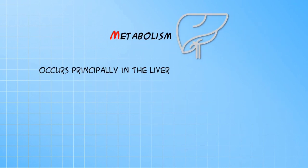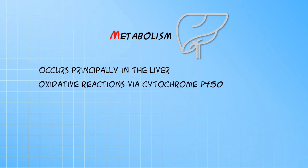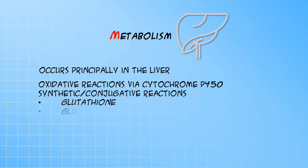Metabolism can take place anywhere in the body, but the primary organ for metabolism is the liver. It accomplishes this through two types of enzymatic reactions: oxidative-type reactions through a superfamily of enzymes called cytochrome P450 enzymes, and another group of unrelated enzymes that conjugate the drug molecule with larger, more water-soluble moieties such as glutathione, glucuronides, and sulfates.